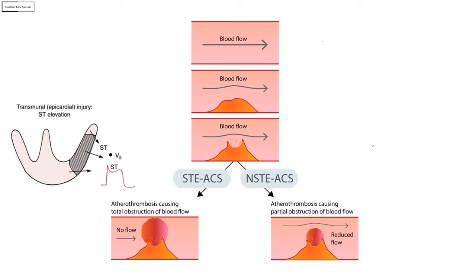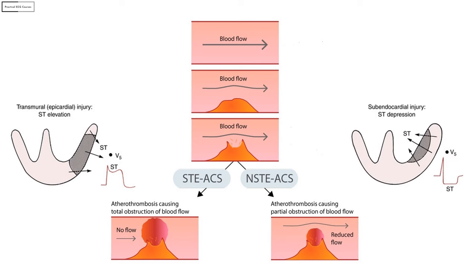If the thrombus is small and only partially occludes the artery, the subendocardial region gets affected as it has the highest metabolic rates — on ECG this is represented as ST segment depression. If the partial occlusion is significant enough to cause infarction, there is a release of troponins, referred to as NSTEMI. If it only causes ischemia but not infarction, troponins are not released — this is unstable angina.